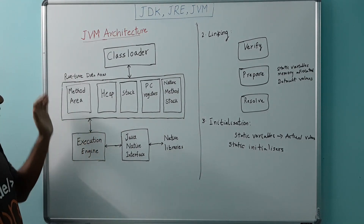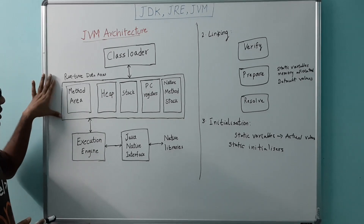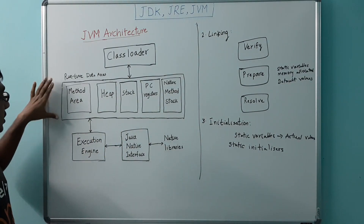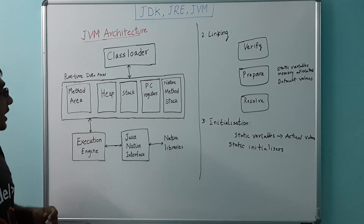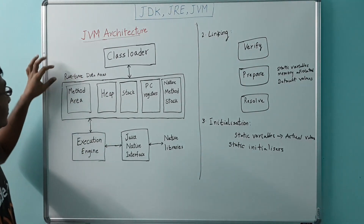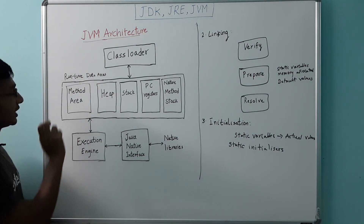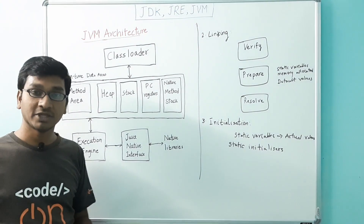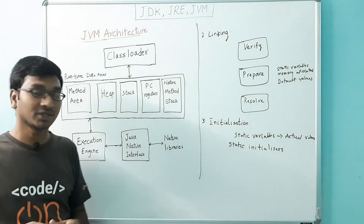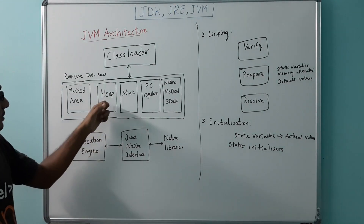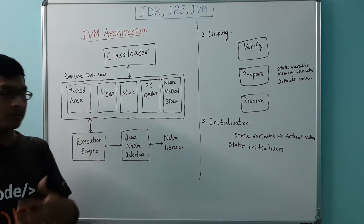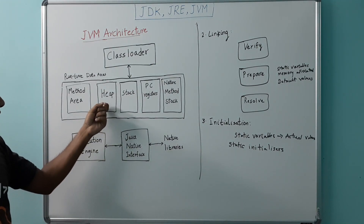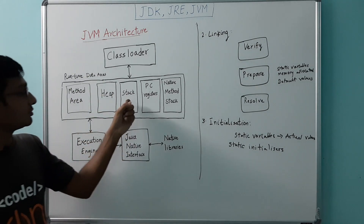Next comes the runtime data areas. Once the classes are loaded and verified, the JVM uses various memory areas for execution of Java programs — these are used at runtime, hence the name runtime data areas. The method area stores class structure like the runtime constant pool, field and method data, and the code of actual methods and constructors. Next comes the heap, which allocates memory for class instances — objects and arrays — stored in the heap area.